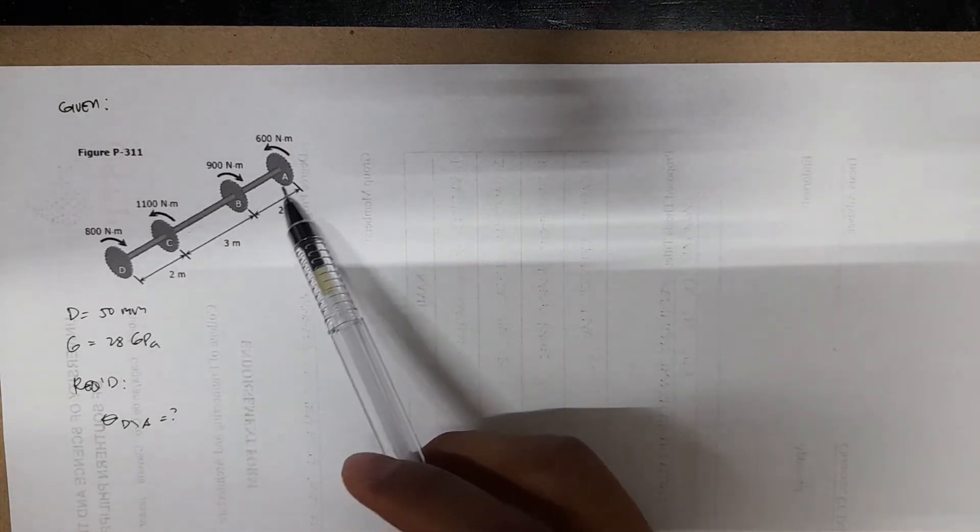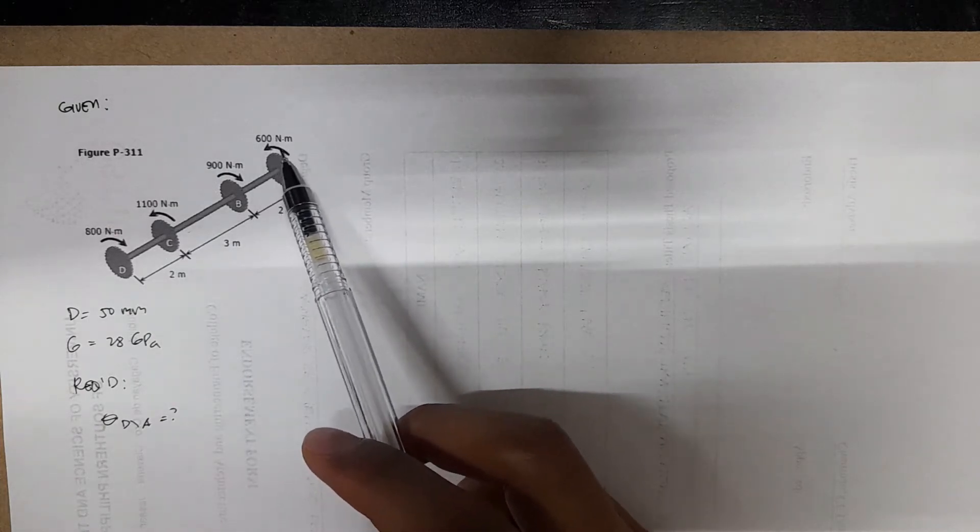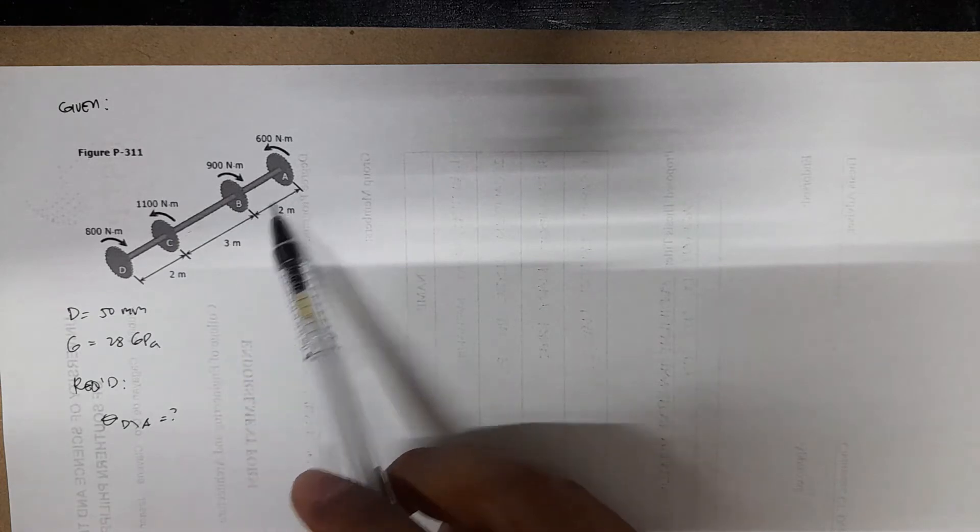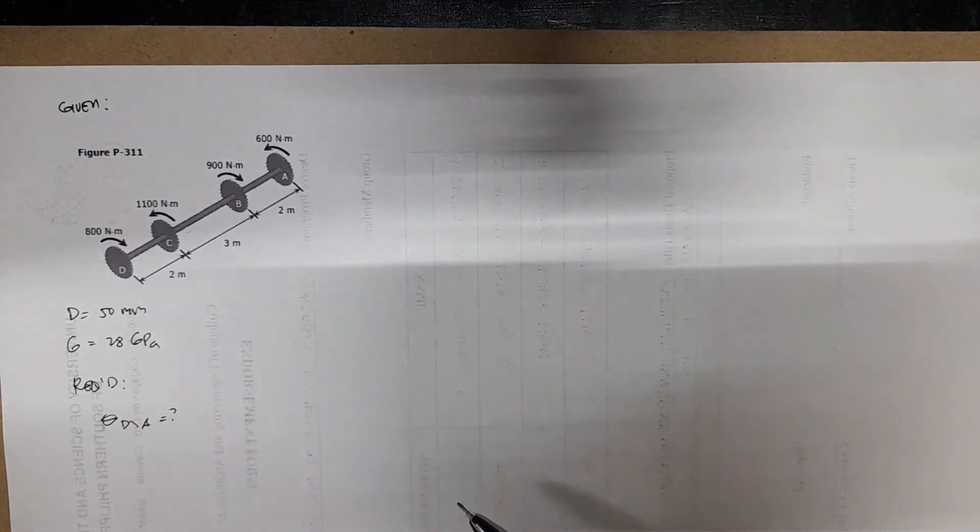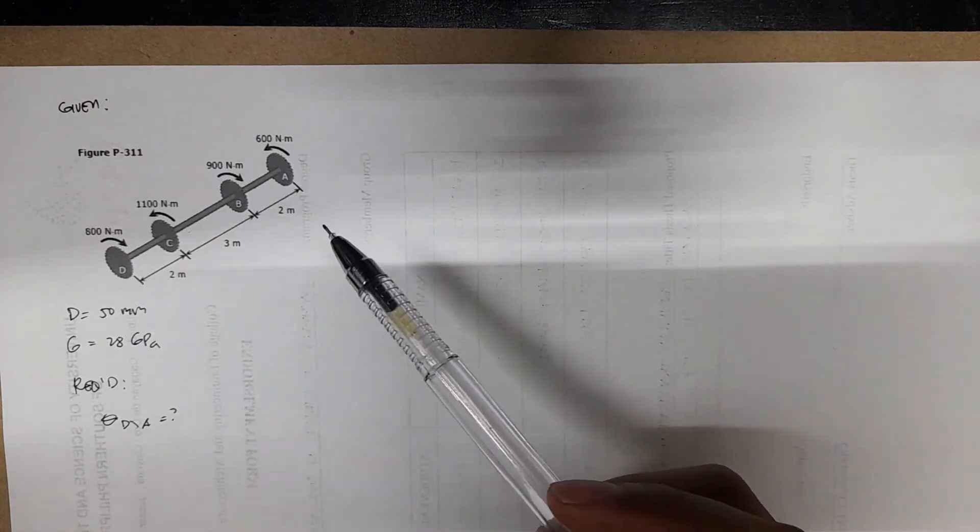So on the shaft attached are gears A, B, C, and D with the magnitude and direction of the torques for each gear also given. Also the dimensions from A, B, C, and D: 2 meters, 3 meters, and 2 meters. So for this problem, we're asked to find the angle of twist of gear D relative to A.